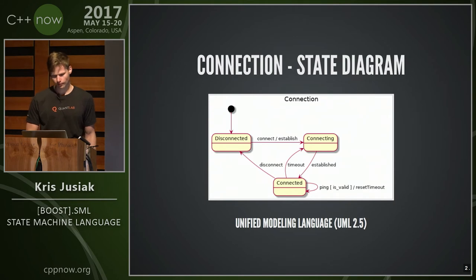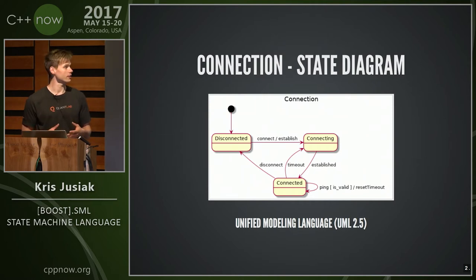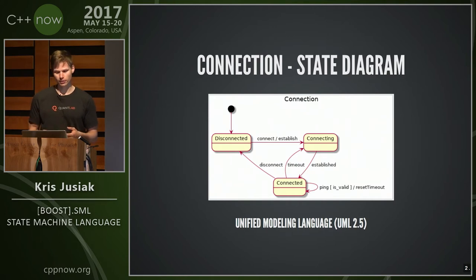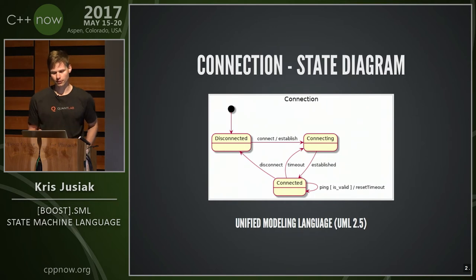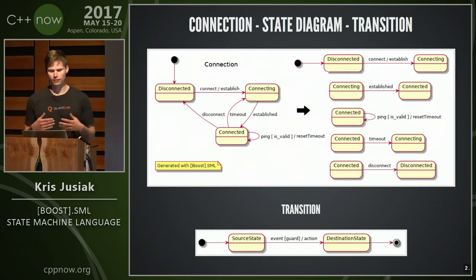Here we have, for example, a connection state diagram. You start from disconnected, you have an event 'connect', you have an action 'established', and we go to 'connecting'. After that you have 'established', 'connected', you can ping when it's valid, you reset timeout — a simple simulation of the connection.